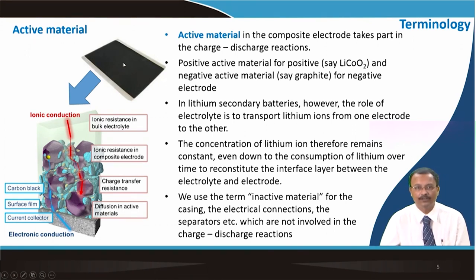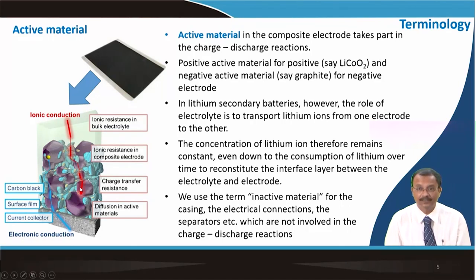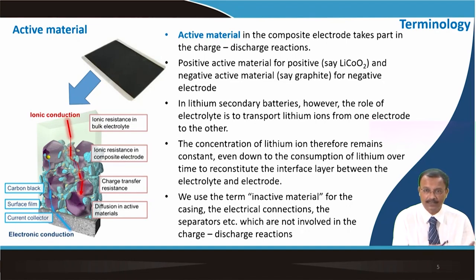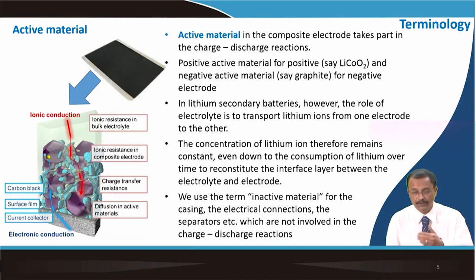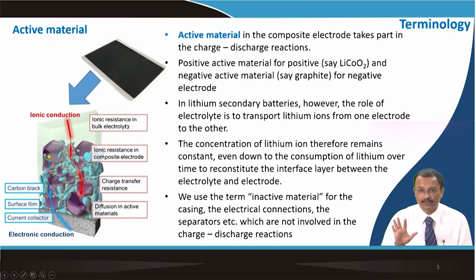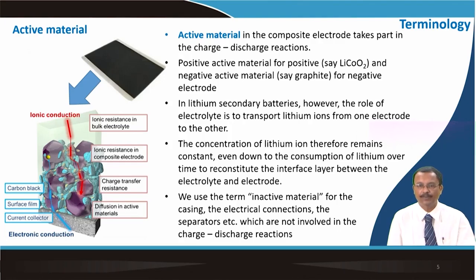For a typical positive electrode, there is ionic resistance in the bulk electrolyte that must be overcome, ionic resistance of the composite electrode, charge transfer resistance when the alkali ion enters or exits the electrode material, and diffusion inside the active material. Many phenomena occur inside this composite electrode during charge and discharge. The active material constitutes about 80 percent of the total composite electrode, with 10 percent acetylene black and 10 percent PVDF.